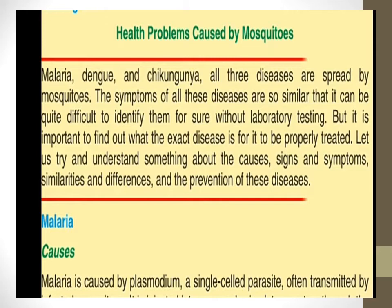Without laboratory testing you cannot know exactly what disease it is. In this chapter we will understand something about the causes, signs and symptoms, similarities and differences, and the prevention of these diseases — how we can prevent ourselves from these three diseases.